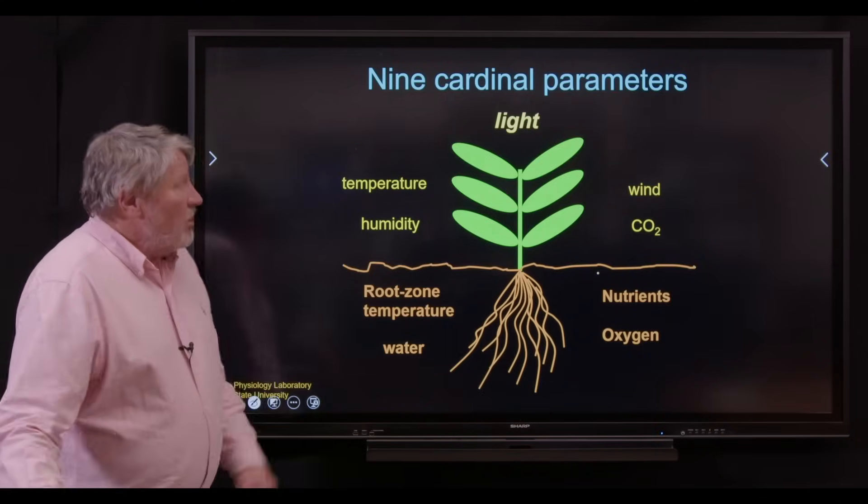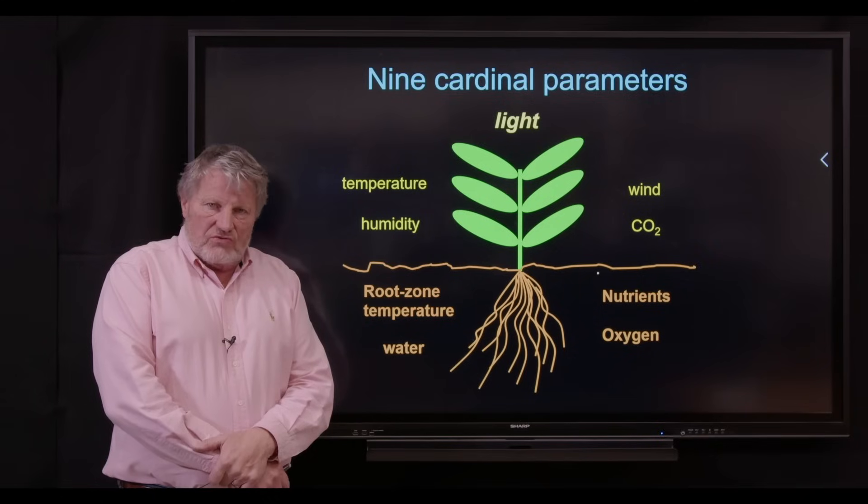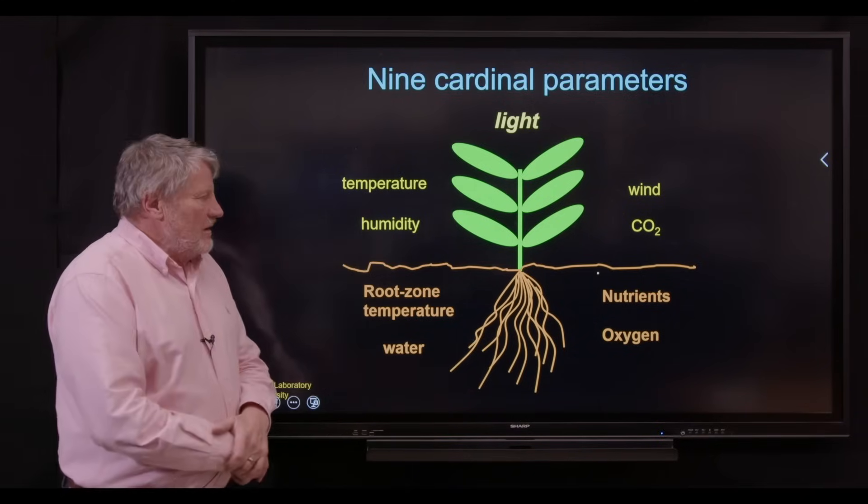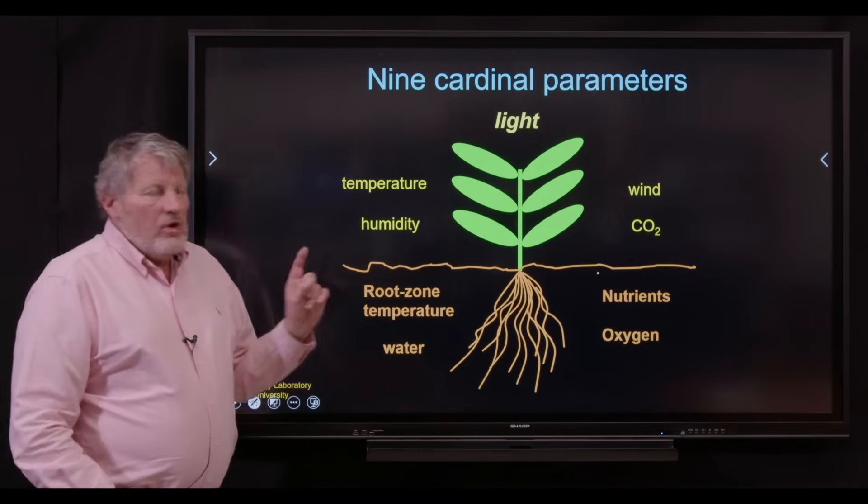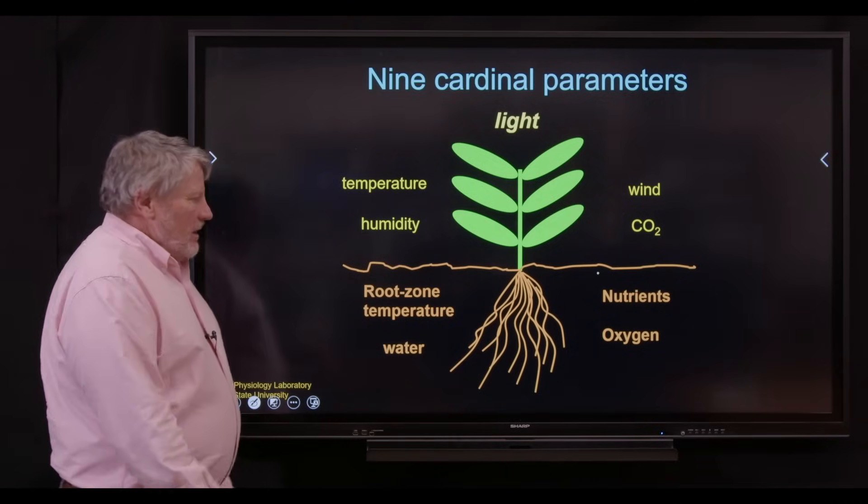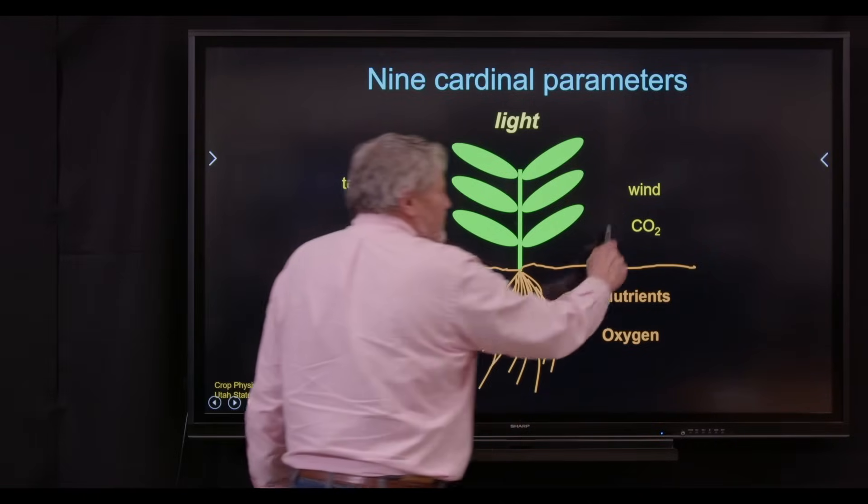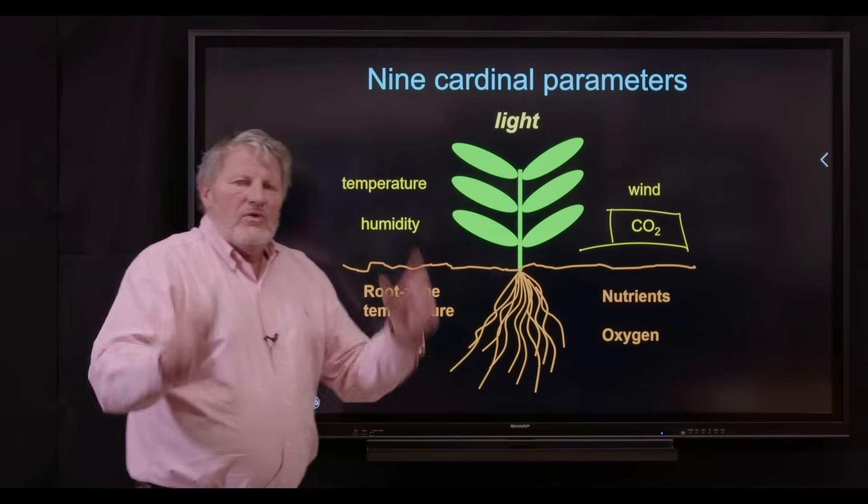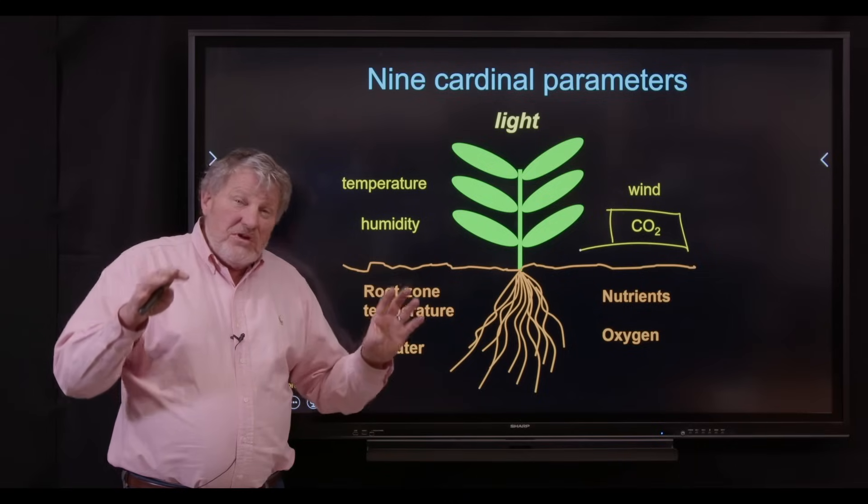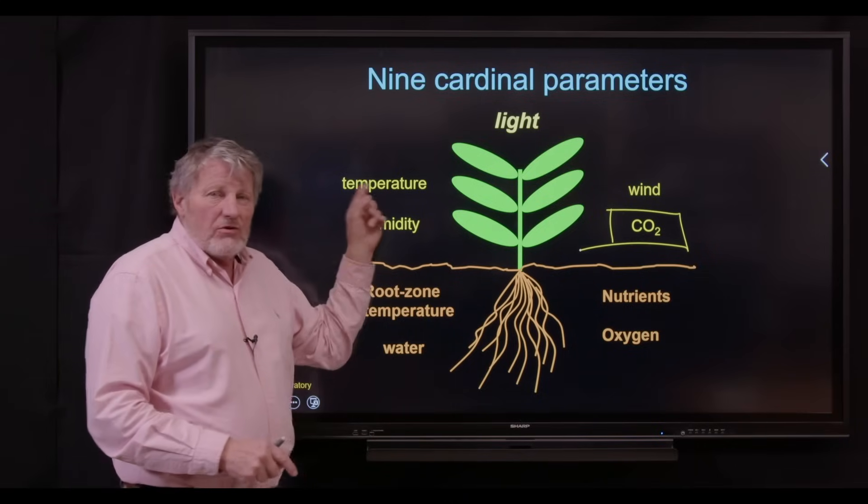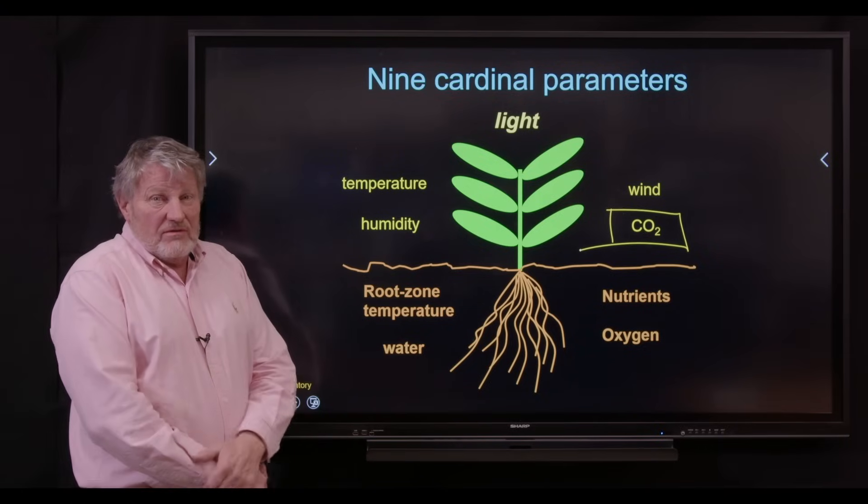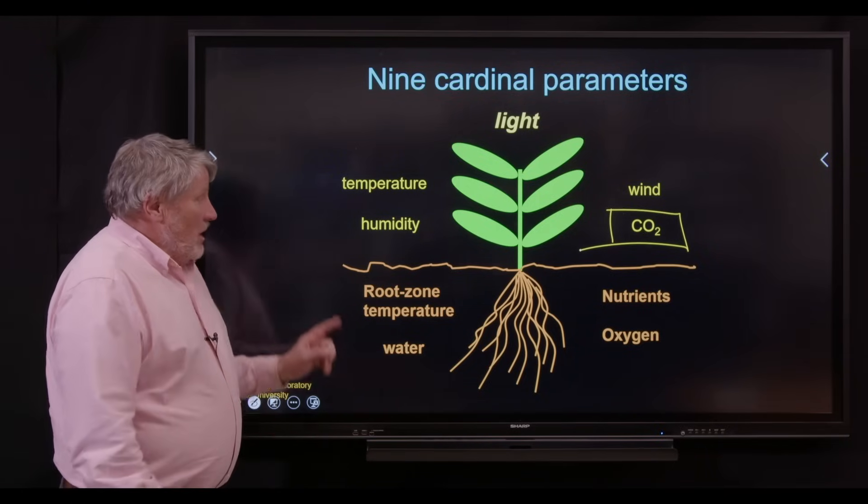Now, let's take a look at what I call the nine cardinal parameters for growth. I've shown this slide several times and other people have used it. When we go inside, we control all of these parameters. Of significance is CO2. We elevate CO2. That enhances photosynthesis 30 percent, maybe even 40 percent. It allows us to use a higher temperature when we elevate CO2 because of photorespiration. It's a huge difference with indoor.